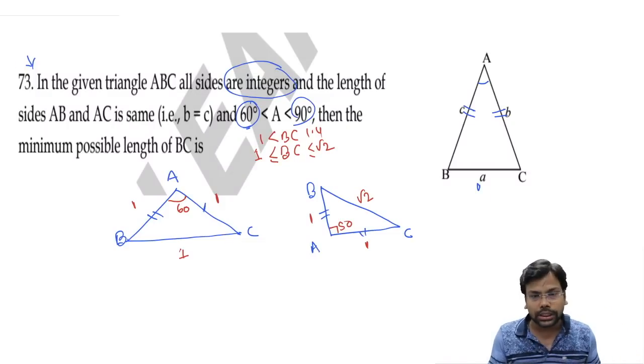If I assume AB and AC as 1, we are not getting any integer value of BC. Now let's assume AB and AC are nothing but 2, 2.